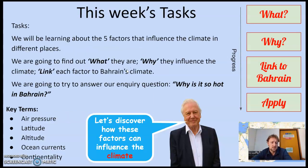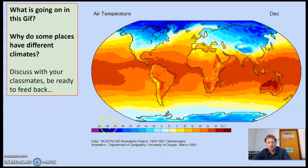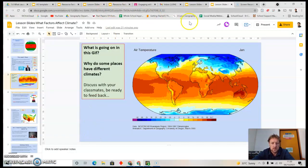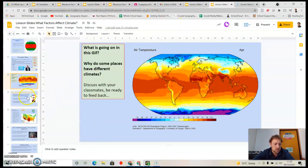So I'll go through this really quickly because you need to crack on. So this is the tasks. You're going to be finding out what factors affect climate, why they affect climate, and then link to explain Bahrain's climate. So what, why, link to Bahrain. So each one, air pressure, what is it, why does it affect rain and temperature, and link to Bahrain's rainfall and temperature. So what I'm going to do, let's go down to the instruction slides here.